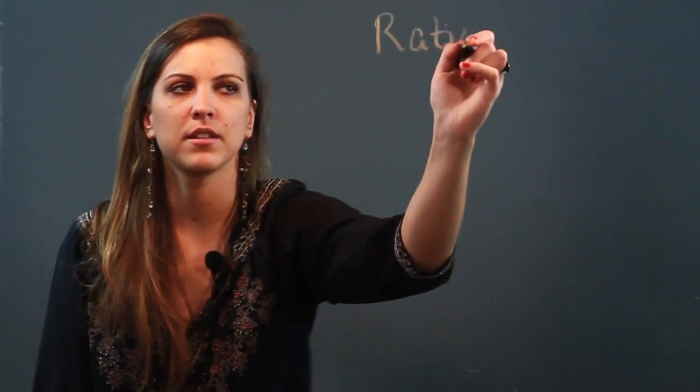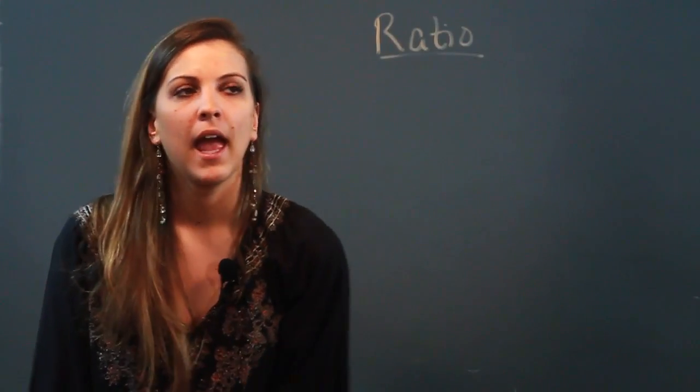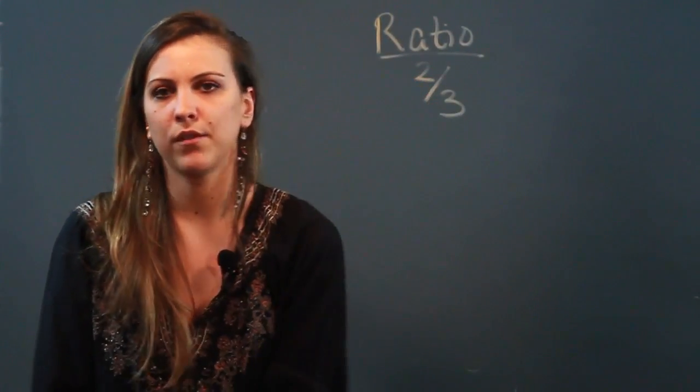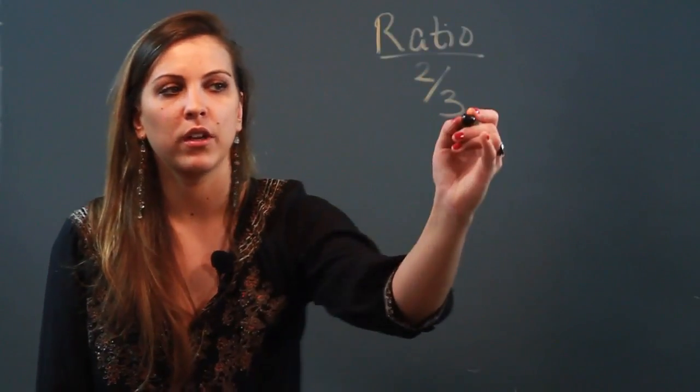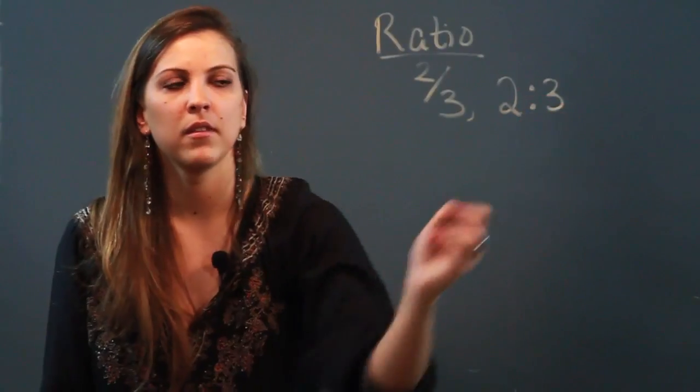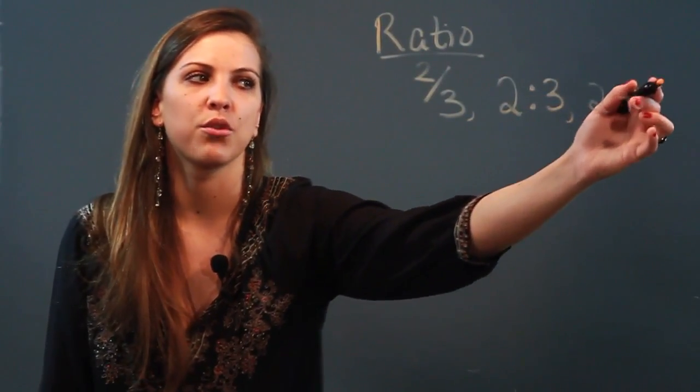So ratios are just comparisons of numbers and there's a couple different ways to write them. I can compare the numbers 2 and 3 by writing them as a fraction, I can say 2 over 3, or I can write the ratio with a colon 2 to 3, or I can write it out in words, 2 to 3.